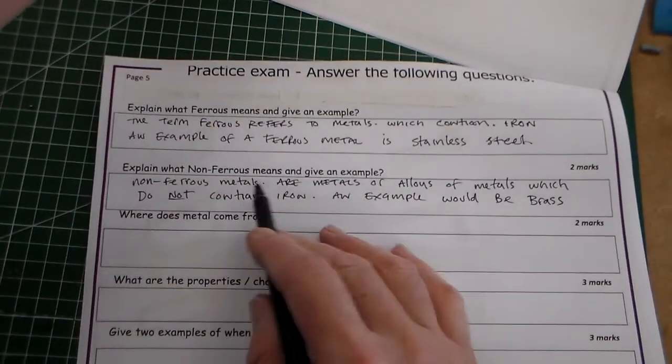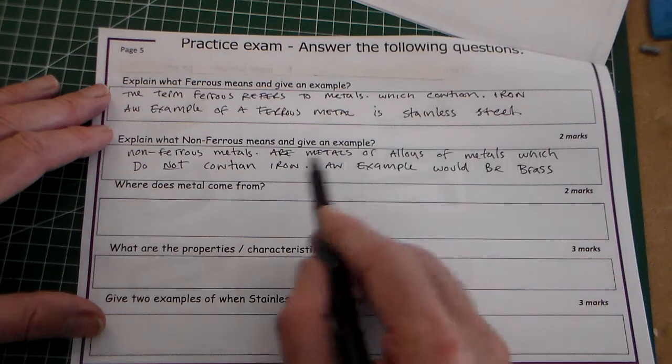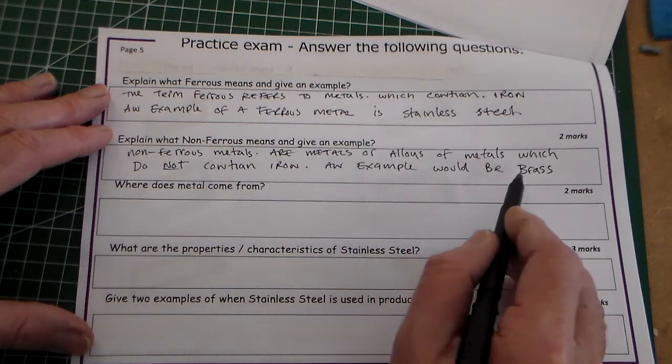That's two marks. There we've got our explanation: non-ferrous metals are metals or alloys which do not contain iron, and an example, brass.